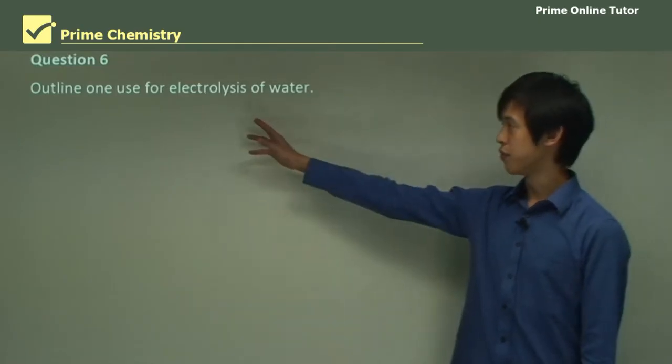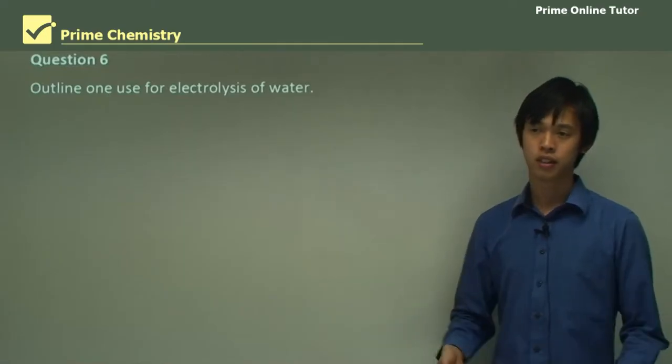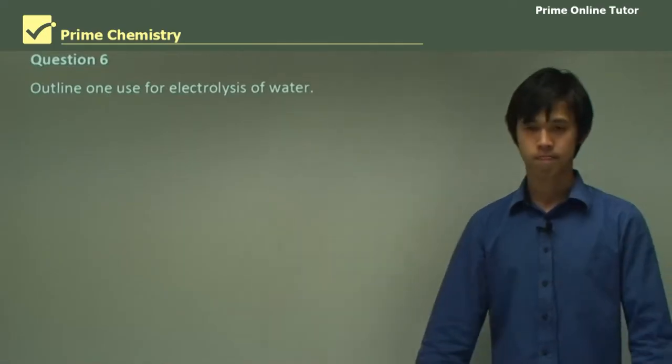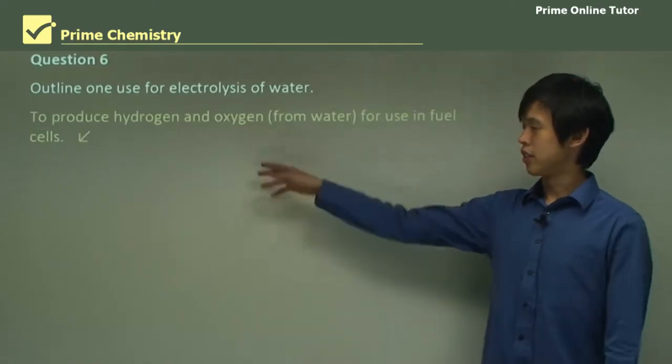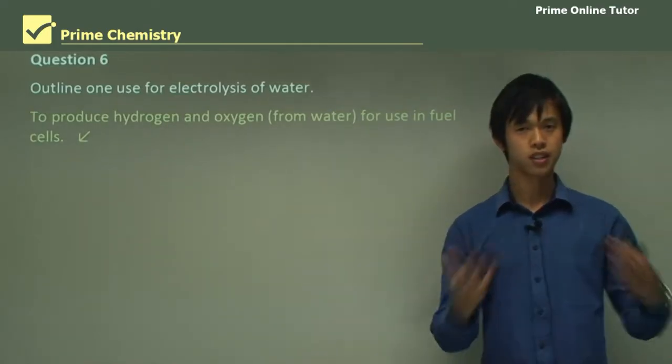Question 6: Outline one use for electrolysis of water. Can we use electrolysis for something useful? Yes. To produce hydrogen and oxygen from water for use in fuel cells. I don't know if you've studied this yet.